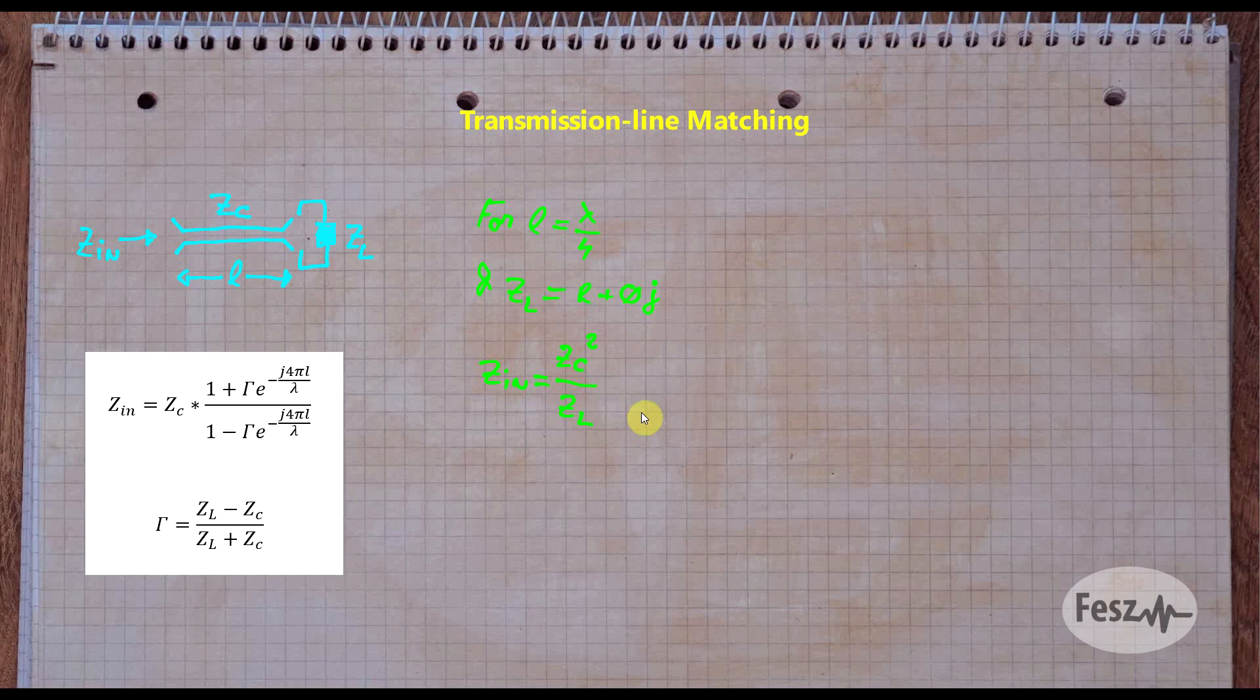One form of transmission line impedance matching is based on the quarter wavelength transformer. Here, the length is fixed to a quarter wavelength line, and by using the appropriate transmission line impedance, two real only impedances can be matched. This however does not work with complex impedances. Now a real and complex impedance can be matched using series transmission lines, but for this normally two pieces of transmission line are needed.